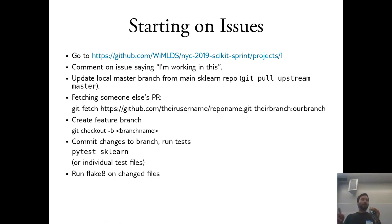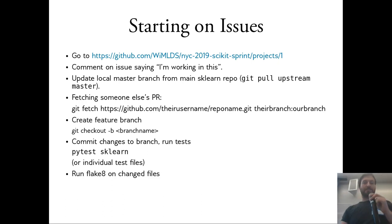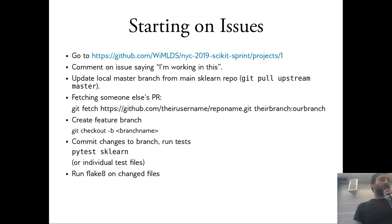When you pick an issue, you just say 'I'm working on this' in the issue — maybe you can also say you're working on this as part of the Women in Machine Learning sprint in New York. Before you start working, make sure you have the current version of the upstream master by running 'git pull upstream master.'